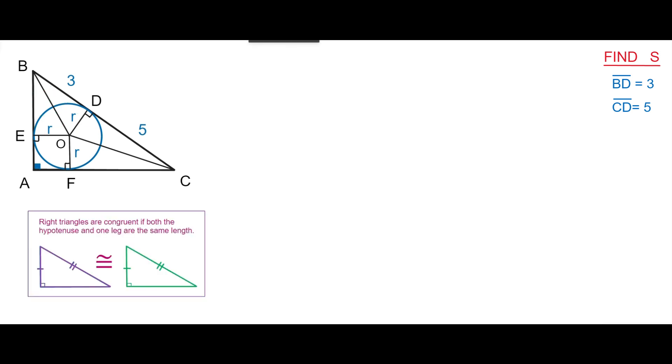So here we know triangle BOE and triangle BOD are congruent. Therefore the corresponding legs are congruent. So here BE is equal to 3.